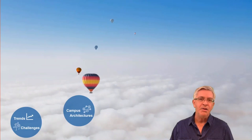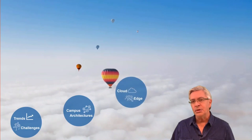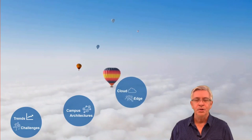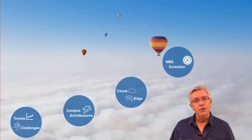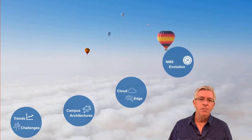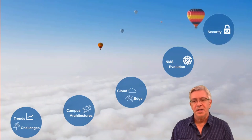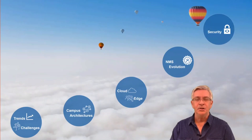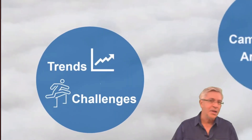Then I'll touch on two and three-tier campus architectures and related topics, before comparing cloud and on-premise solutions and the advantages of a hybrid approach. You'll explore the evolution of network management systems, or NMS, before moving on to a discussion of security needs. So let's jump right in and talk about trends and challenges related to modern campus network design.